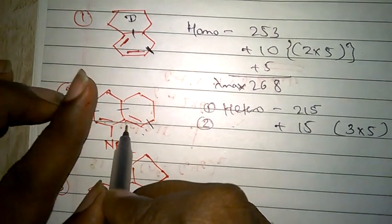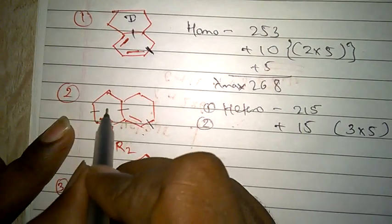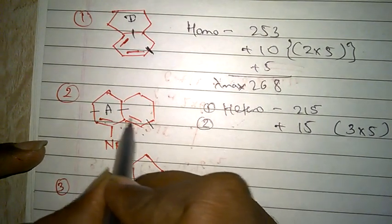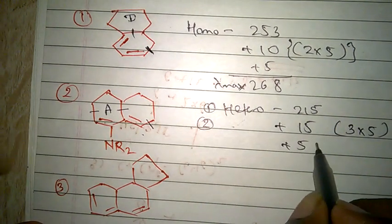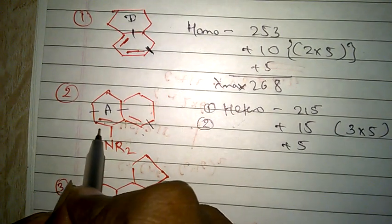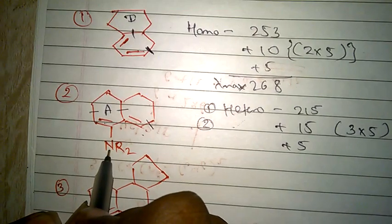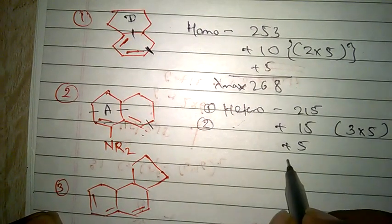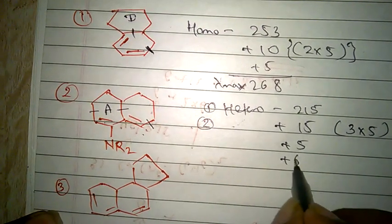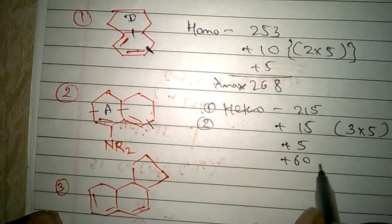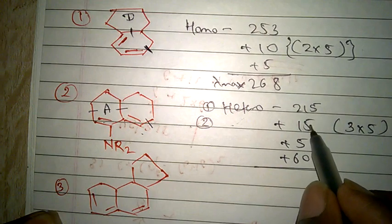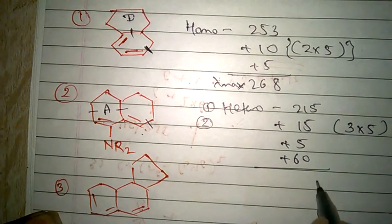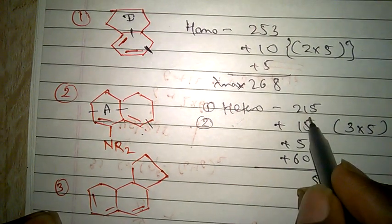After that, we have to see the exocyclic. For this ring, the ring has a double bond outside, add 5. There is no increment? There is one increment, that is NR2. For NR2 group, we add 60. Total is 295 lambda max.